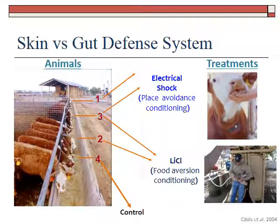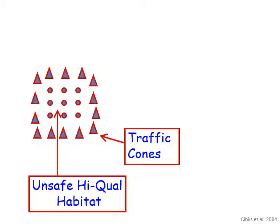Andrew Sibbles and Larry Howery did some work with cattle to see if cattle do the same things as rats. This was done in Tucson, Arizona. The cattle were randomly assigned to one of four treatments: the first group received electric shock, the second received only lithium chloride which made them ill, the third received both electric shock and lithium chloride, and the fourth received no feedback. They set up experiments where they put food out in the environment with traffic cones as a signal for unsafe habitat.